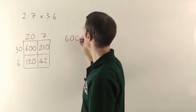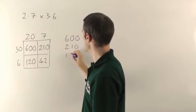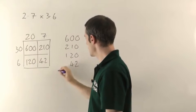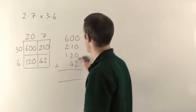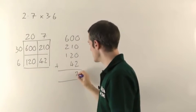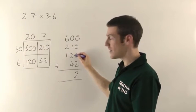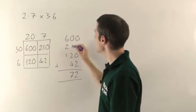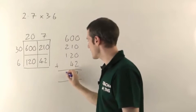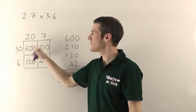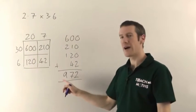Add it all up at the side. 600, 210, 120, and 42. So 0 plus 0, 0 plus 2 is 2. 1 plus 2 is 3, plus 4 gives you 7. And 6 plus 2 is 8, plus 1 gives you 9.